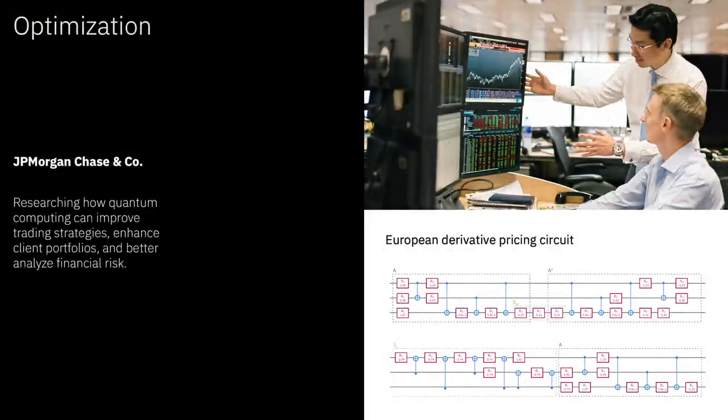Let me give another example for a different industry. This is in the case of our wonderful partner, JP Morgan Chase, where we work on the problem of optimization. And here we're looking at the potential to find better solutions more efficiently than what we can do classically to improve things like options pricing and fraud detection or portfolio optimization. And you're seeing here an example of circuits that have been developed for European derivative pricing.